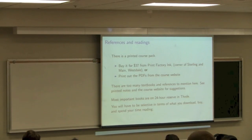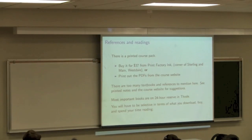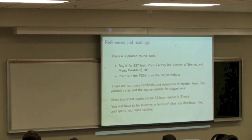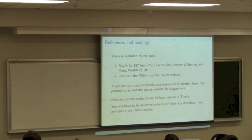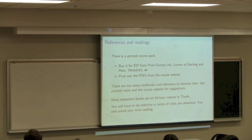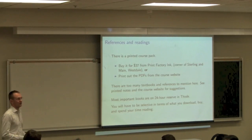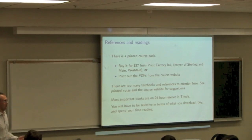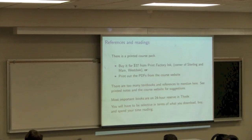There are also a number of textbooks for the course. One is Don Woods' book on troubleshooting. There are about four or five engineering economics textbooks I've used to develop the material, referenced on the course website. There are also textbooks on safety, troubleshooting, and process operations. There's no single textbook that covers everything for 4N, so I've put the most important books on 24-hour reserve in the library, so you can browse them and decide what to access.